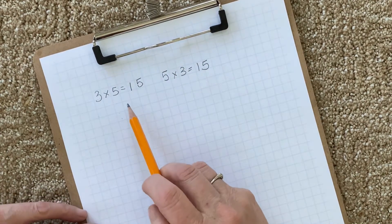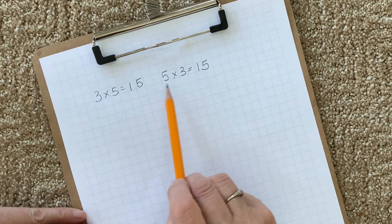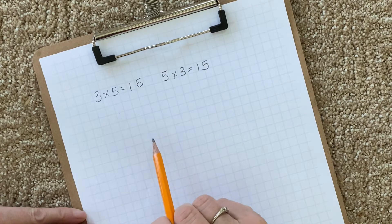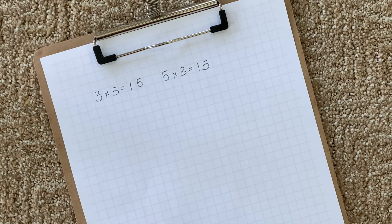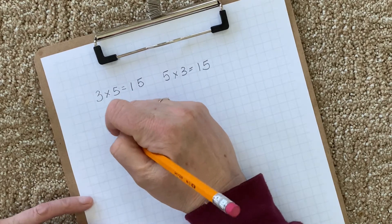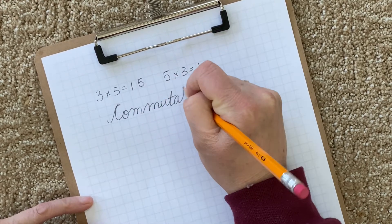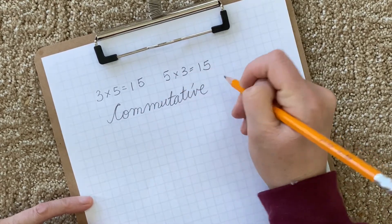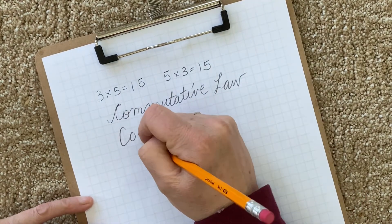Here's an interesting mathematical law. When we multiply two numbers together, it doesn't matter what order they're in. The product will always be the same, no matter the order. This is called the commutative law. It's a big word, isn't it?